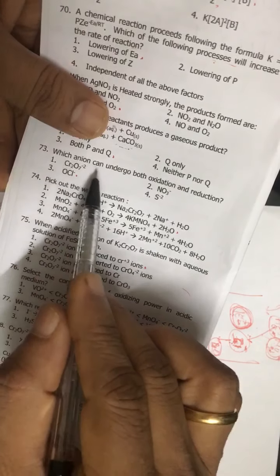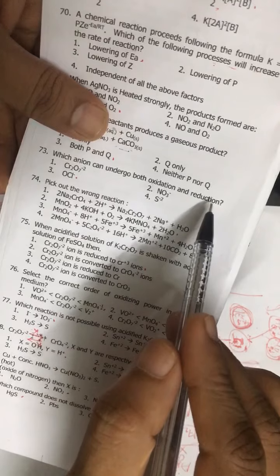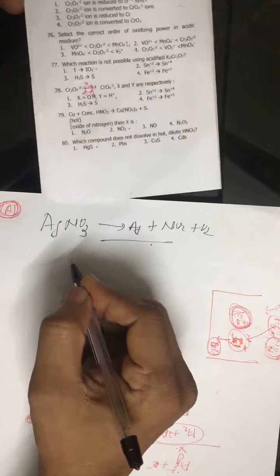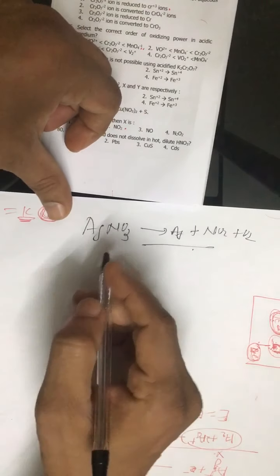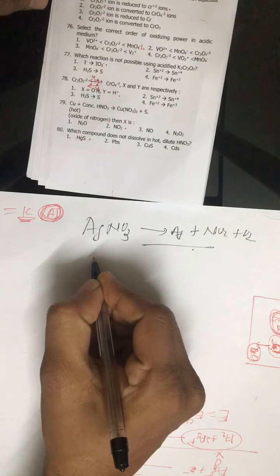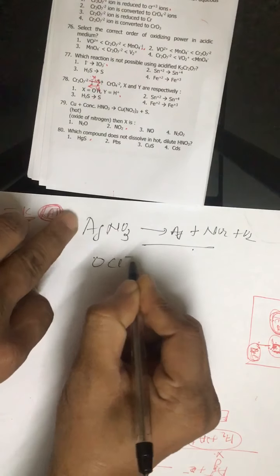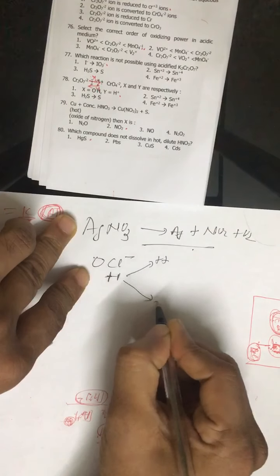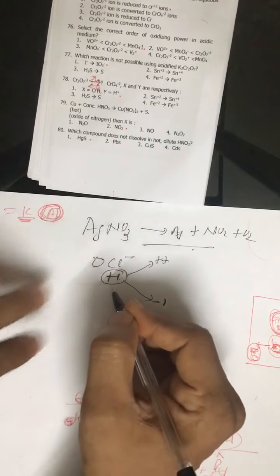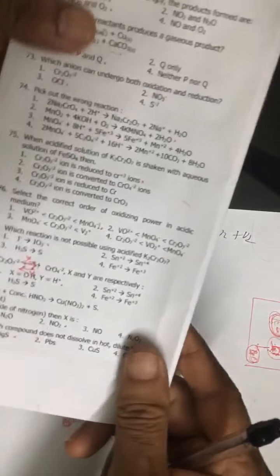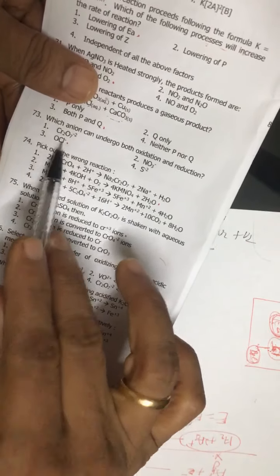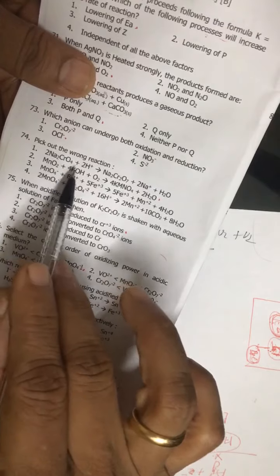Question number 73: which ion will undergo both oxidation and reduction? For that, the oxidation state of the central atom should not be highest nor should not be least. See, like in OCl negative, in OCl negative it is plus 1, so it can be increased up to plus 7 or it can be decreased up to minus 1. So it should be intermediate. If the oxidation state of the central atom is intermediate, it can undergo both oxidation and reduction. So correct answer is third option.